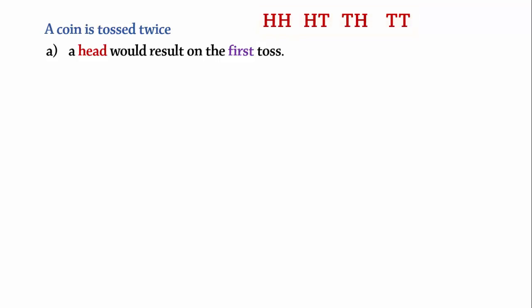Part A. What is the probability that a head will result on the first toss? Since there are only two equally likely outcomes, head and tail, when a coin is tossed, the probability of getting a head on the first toss is simply 1/2 or half.